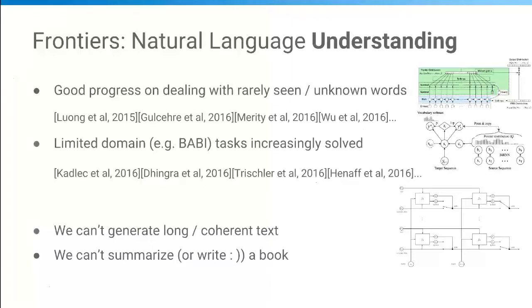We've definitely made a lot of progress on baby tasks. There's also interesting work on how to deal with unknown words or words we see very rarely, which is a key challenge in natural language processing and understanding. But we still can't generate long or coherent text, not to mention a coherent chatbot. We cannot summarize or write a book with tens of thousands of words or more. There are interesting challenges ahead for researchers and new PhDs.